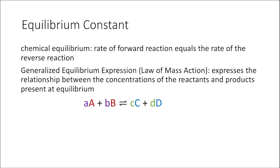We designate our reactions with double-sided arrows, indicating that the forward direction goes from reactants to products, and the reverse reaction goes from products to reactants. Chemical equilibrium is reached when these rates are equal.